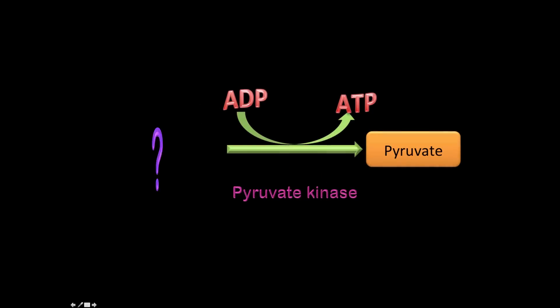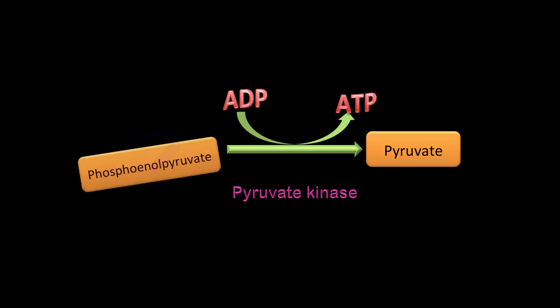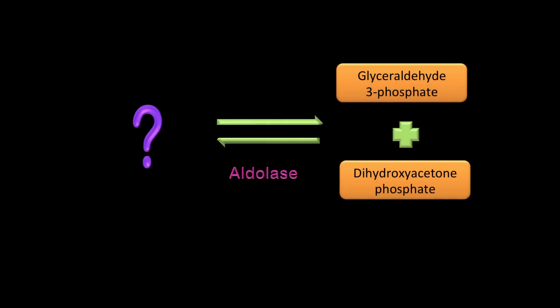Next reaction: what substrate is being converted to pyruvate by pyruvate kinase? That's right — you can say PEP or phosphoenolpyruvate; either one is correct.